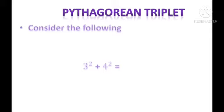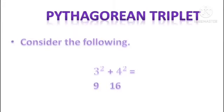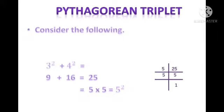What characteristics do they possess? Let us see. Consider these numbers: 3 and 4. You can see that 3 and 4 are consecutive and both are positive. Now let us square these numbers. 3 squared is 9, that is 3 into 3. 4 squared is 4 into 4, which is 16. Let us add these numbers.